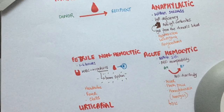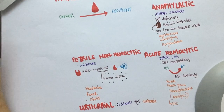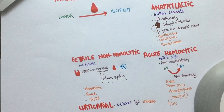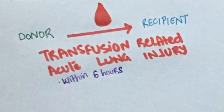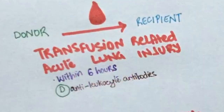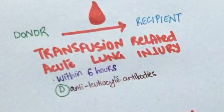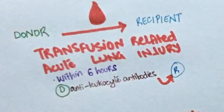If a patient presents with urticaria after blood transfusion, it is likely due to an urticarial reaction. This takes place between two to three hours from transfusing blood, and IgA plays an important role in this reaction. Transfusion-related acute lung injury occurs up to six hours after transfusion. The donor's blood contains anti-leukocyte antibodies, and when blood is transfused, these anti-leukocyte antibodies attack the lungs.